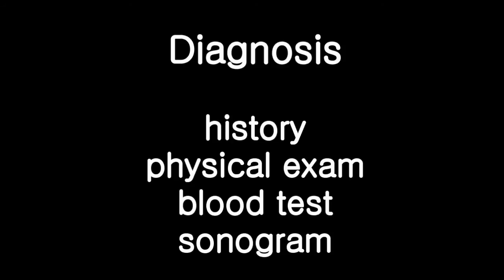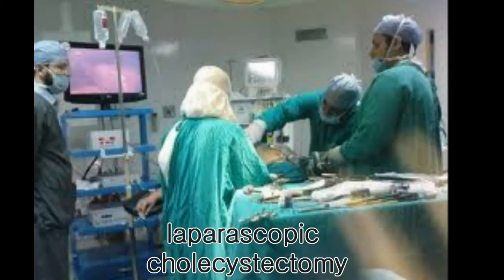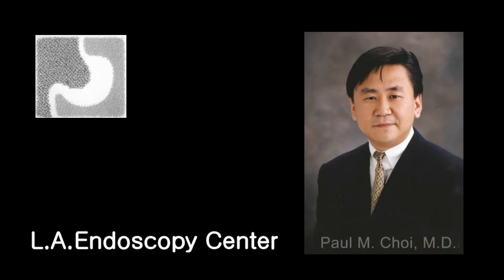Most cases of acute cholecystitis can be diagnosed following a careful review of medical history, physical examination, blood test, and abdominal sonogram. In acute cholecystitis, a surgical removal of the gallbladder is often necessary. With the development of laparoscopy, the removal of gallbladder can be accomplished with minimal surgical scars and short recovery time, usually one or two days.